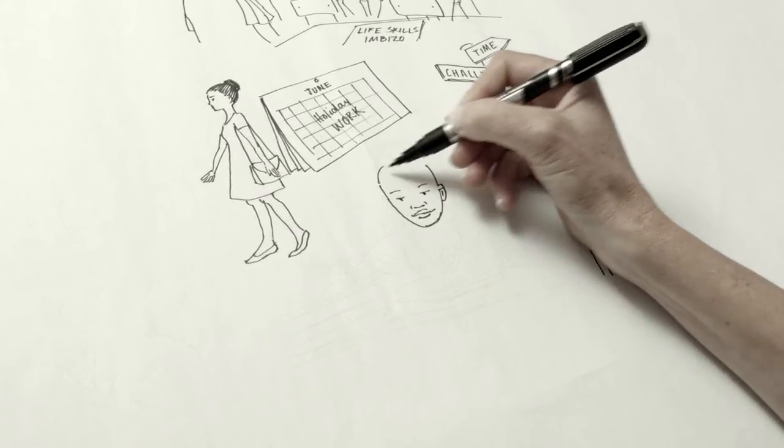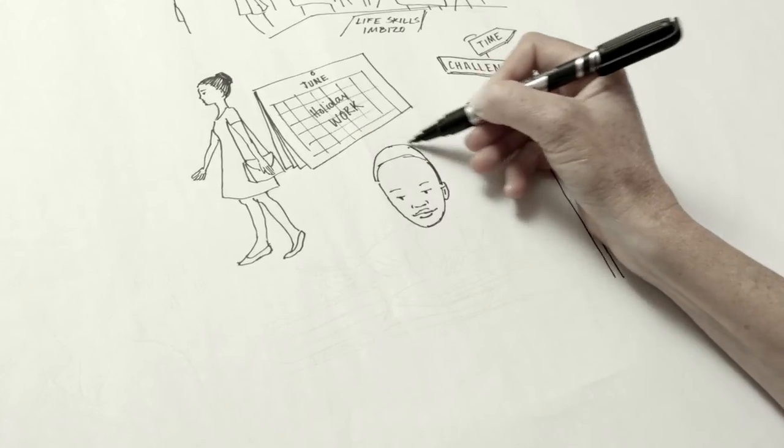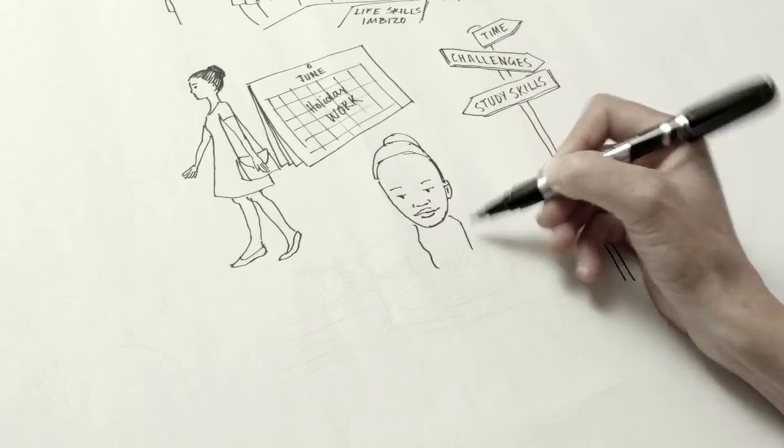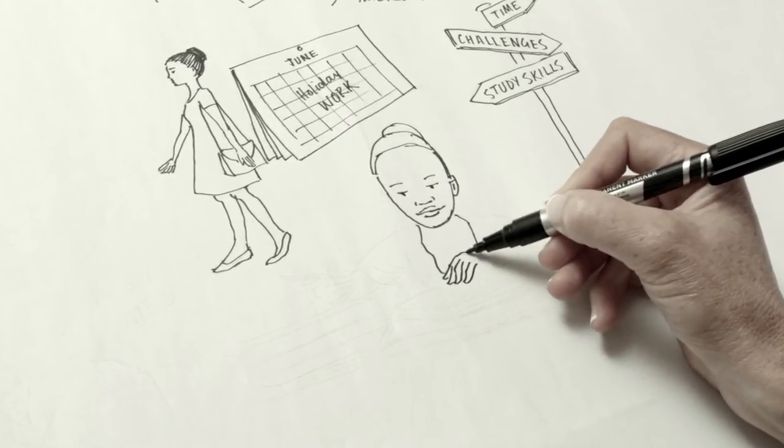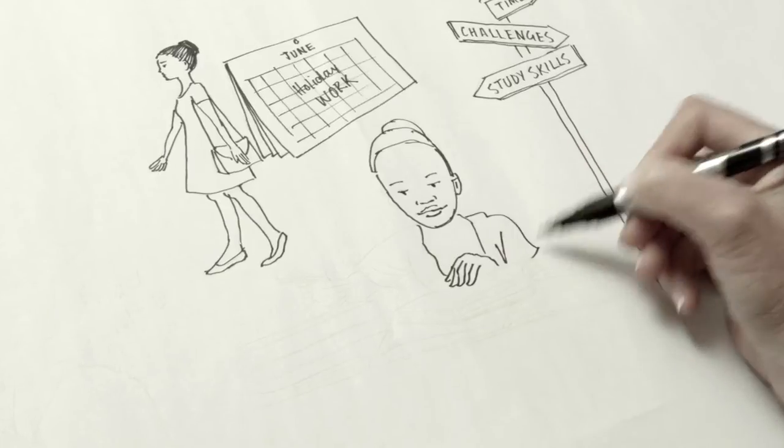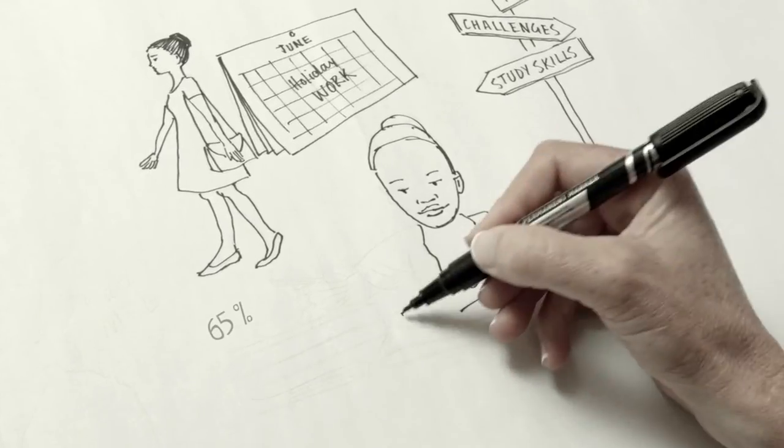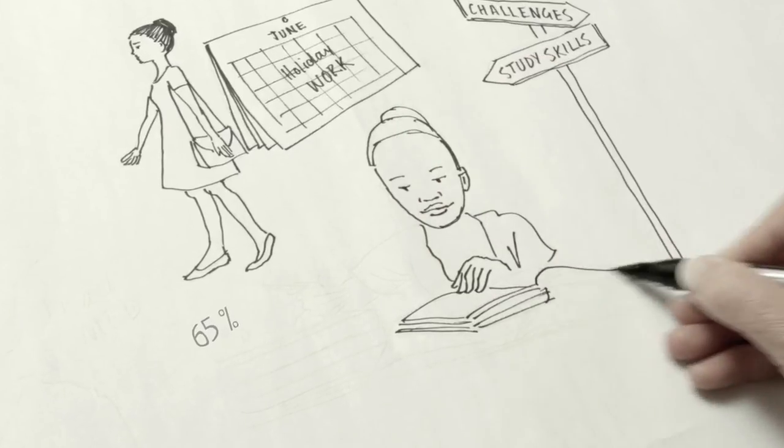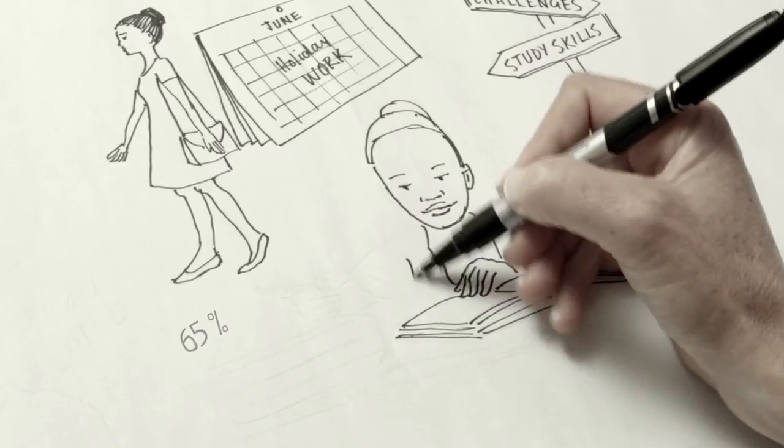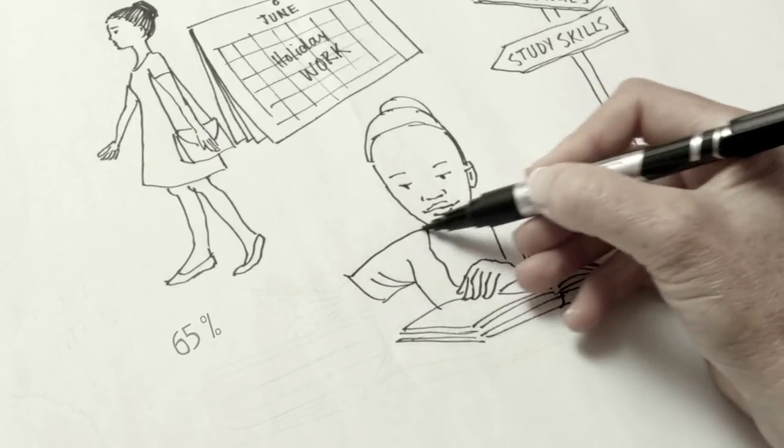Tandi returned to university more confident, knowing what to expect and feeling better equipped. This was short-lived as Dumsani met with all students and announced that he was expecting every student to obtain at least 65% in every subject. Tandi was overwhelmed as she knew how difficult last year was, but she had no option but to apply herself and aim higher.